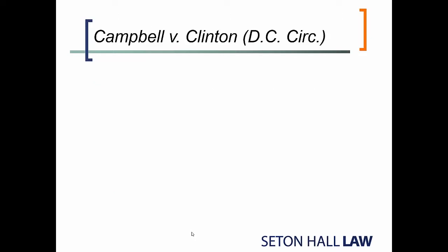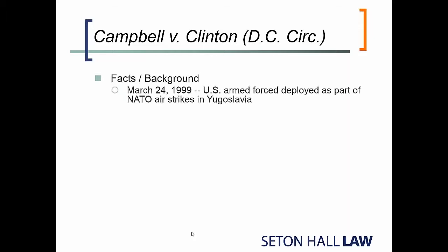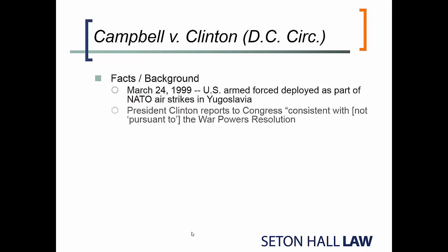The other case is Campbell v. Clinton, a direct challenge to a president's action under the War Powers Act, decided in the D.C. Circuit — not by the Supreme Court. The factual background: in 1999, the U.S. committed armed forces under NATO to deliver airstrikes, including using U.S. fighter jets and cruise missiles in a conflict in Yugoslavia. President Clinton makes a report to Congress about this activity — not stated as being pursuant to the War Powers Resolution, but 'consistent with' it — consistent with what I mentioned before, an effort to suggest you're making a report but not formally triggering the War Powers Resolution.